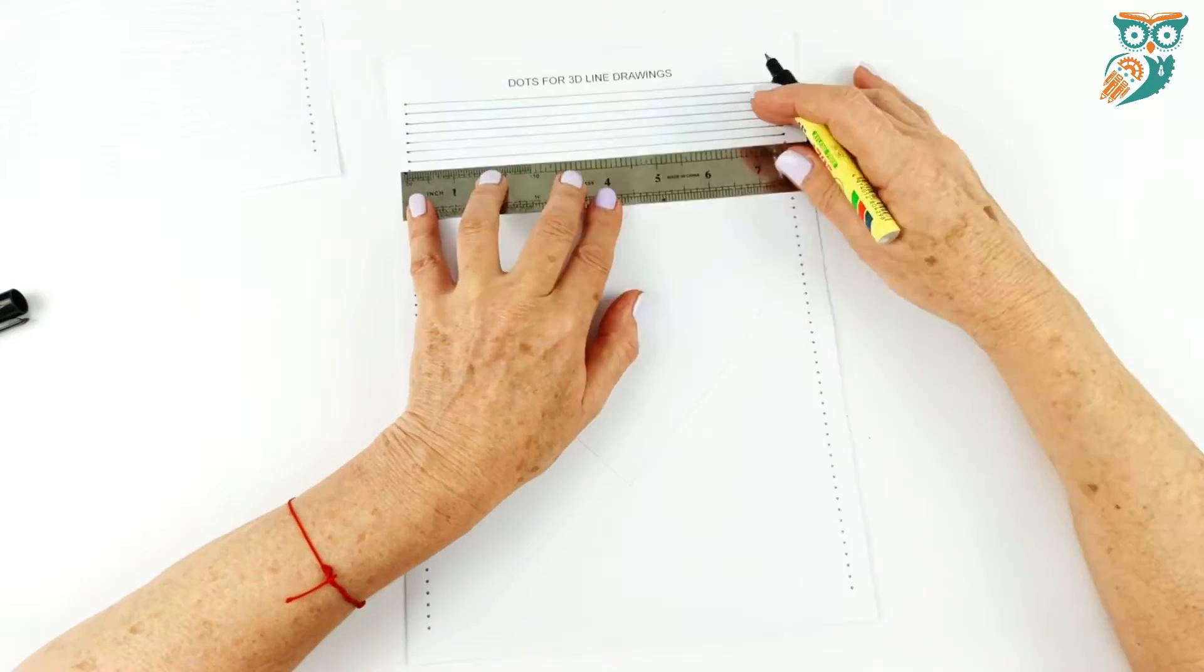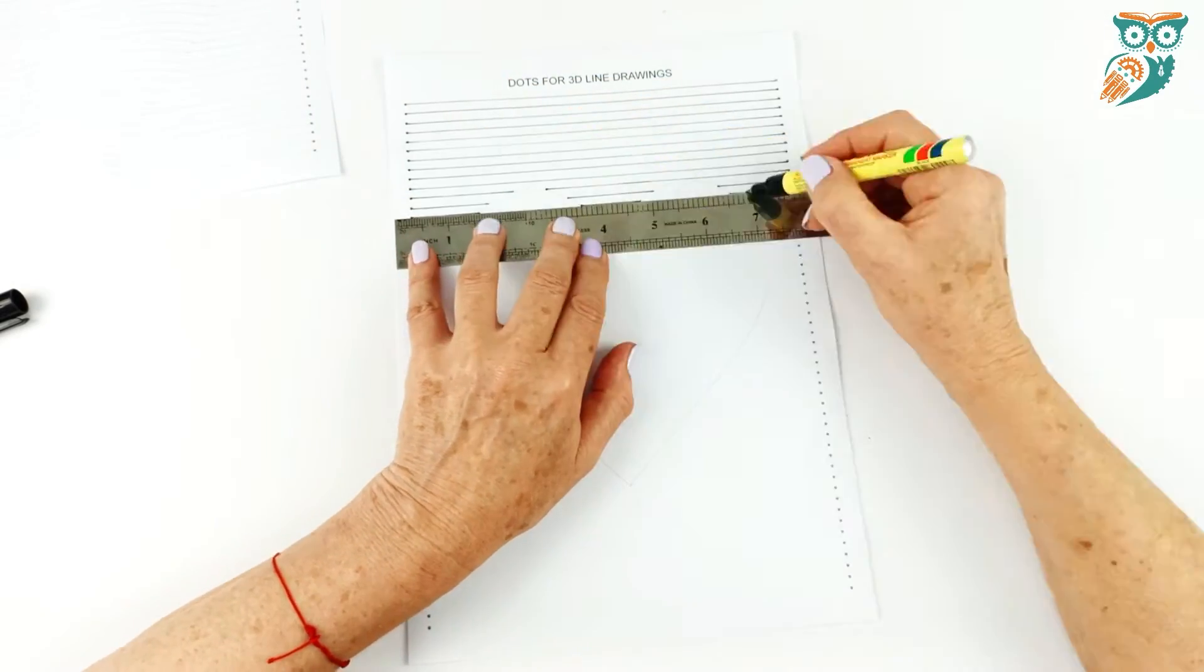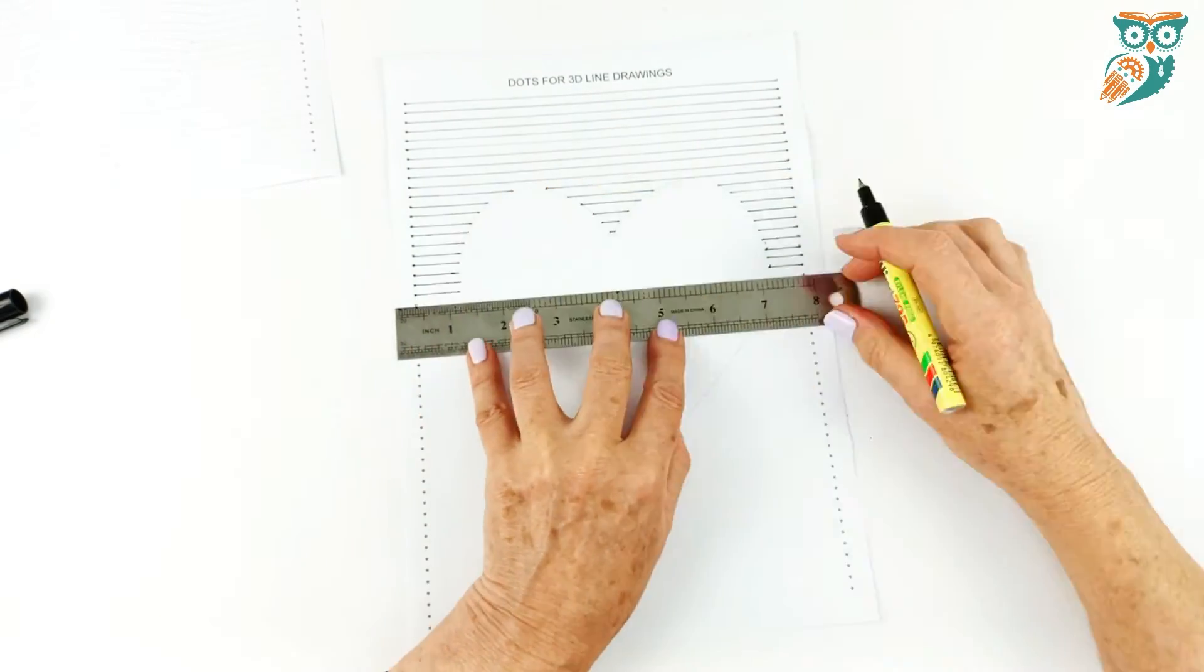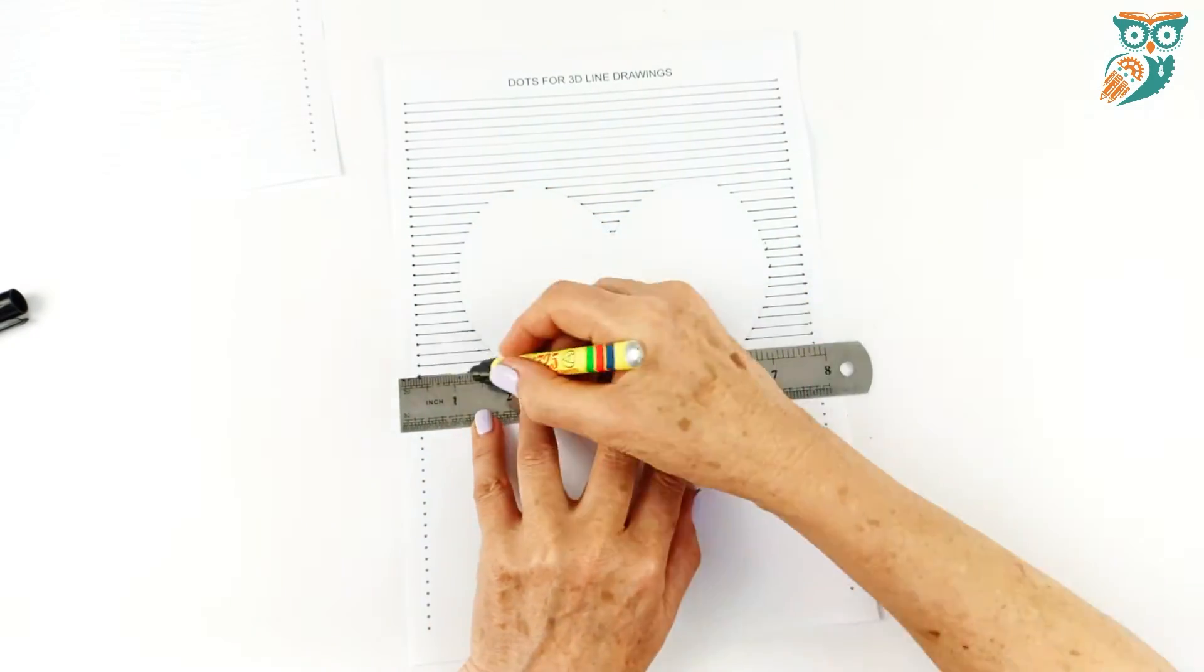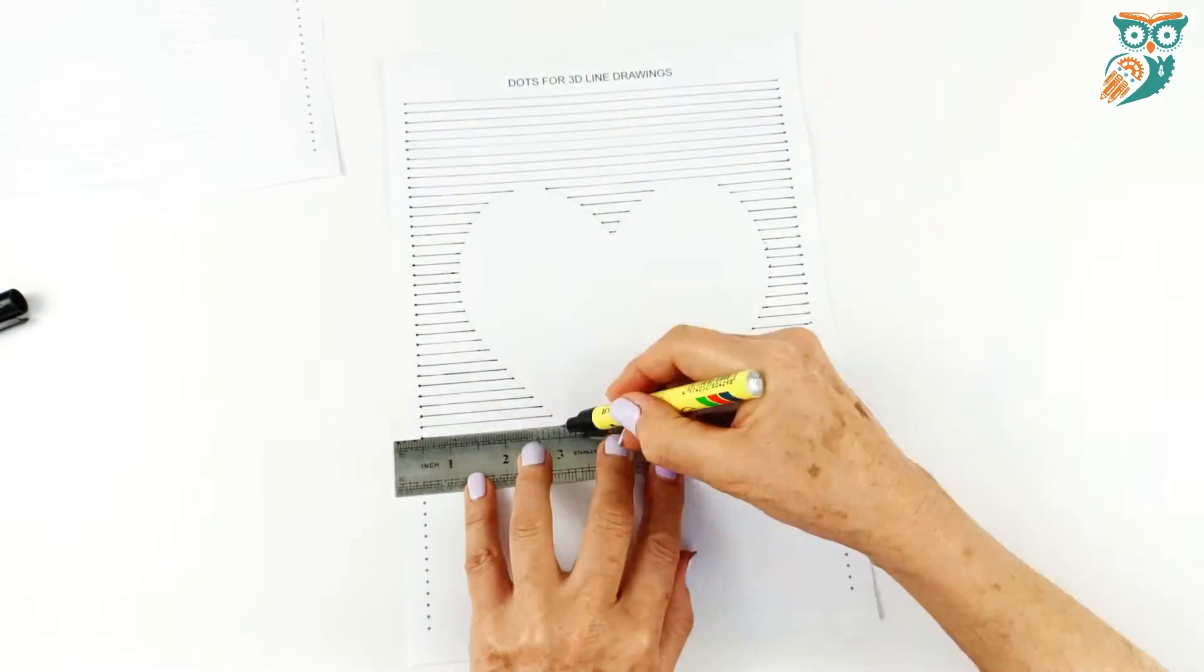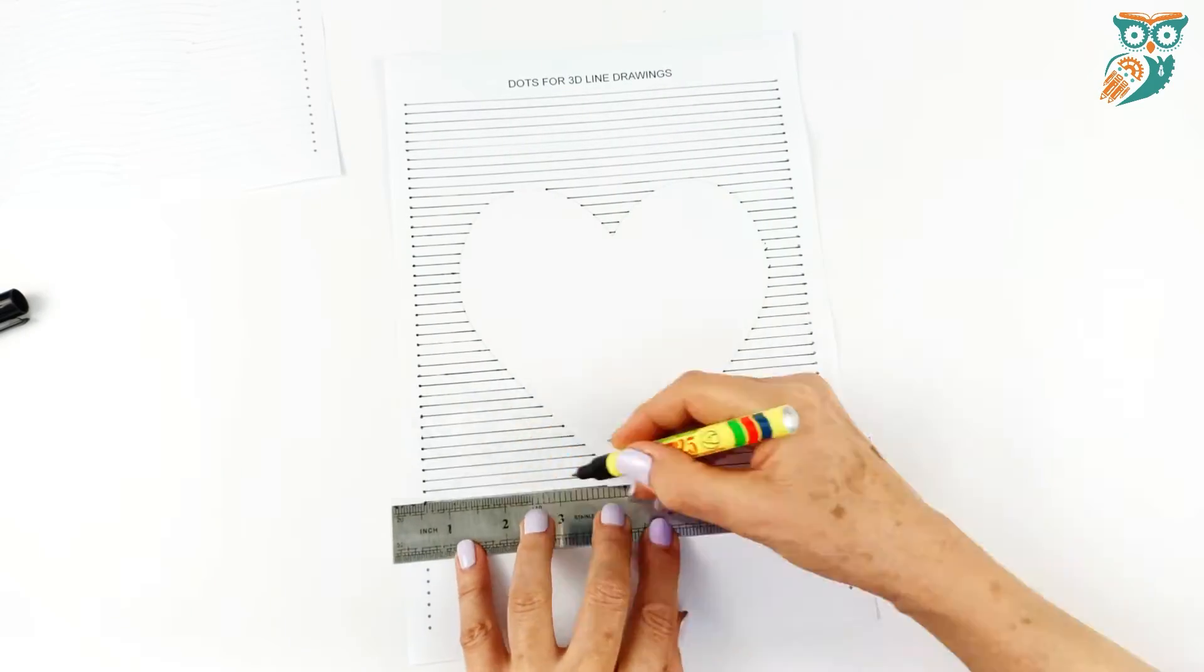And now we're going to do the same with the heart. This time we jumped straight to a permanent marker. It's up to your comfort level whether you go straight to the marker or want to use a pencil first and then trace over with the marker afterwards.